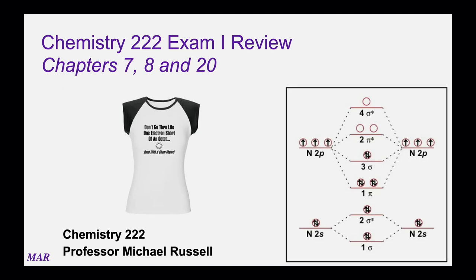Greetings and welcome to the Chemistry 222 Exam 1 Review, where we're going to go over some problems very similar to things you might see on the first midterm exam for Chemistry 222. This midterm exam will cover chapters 7, 8, and 20. Chapter 7 introduced Lewis structures, VSEPR geometry, and polarity. Chapter 8 compared valence bond hybridization to molecular orbital theory. Chapter 20 covered organic chemistry.